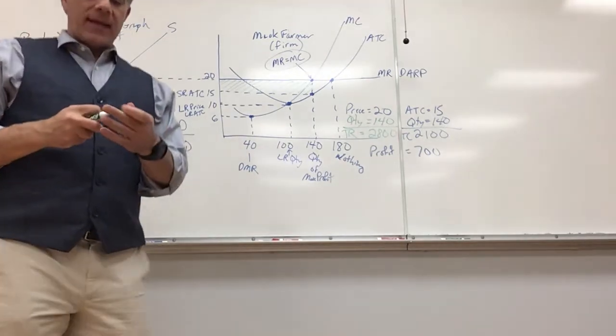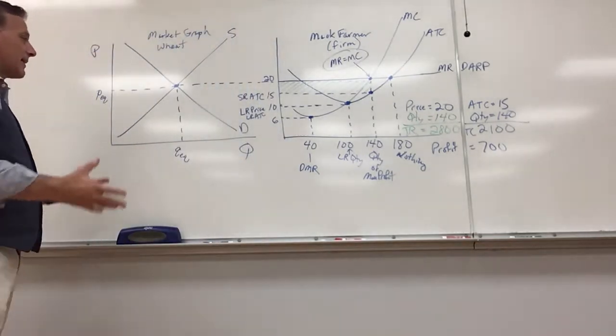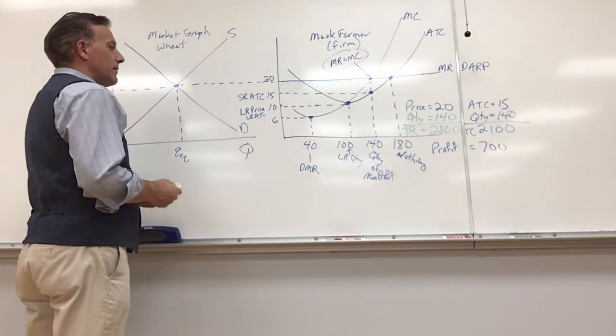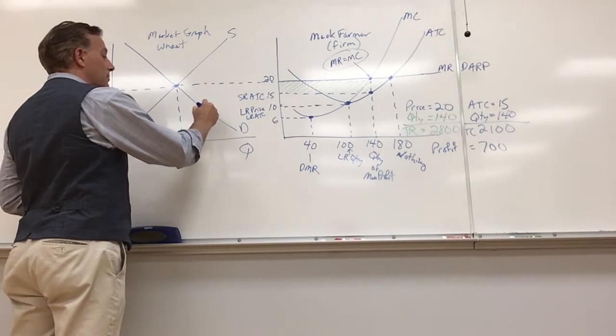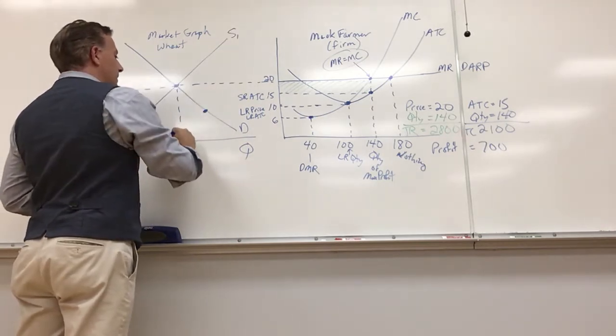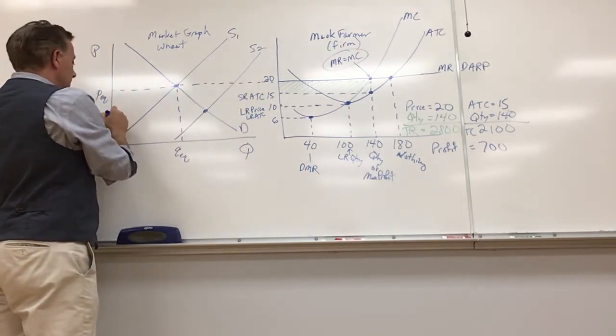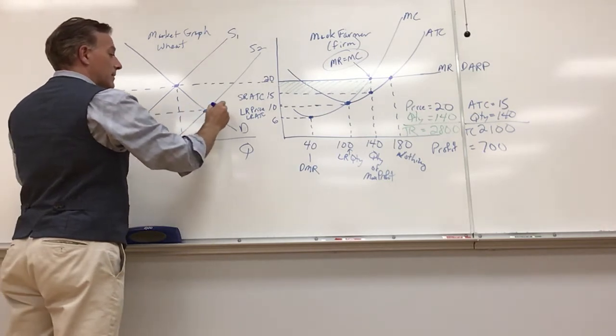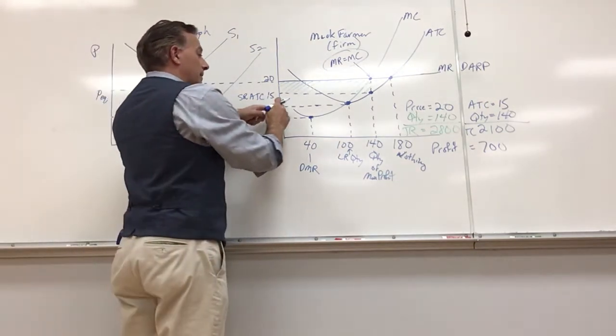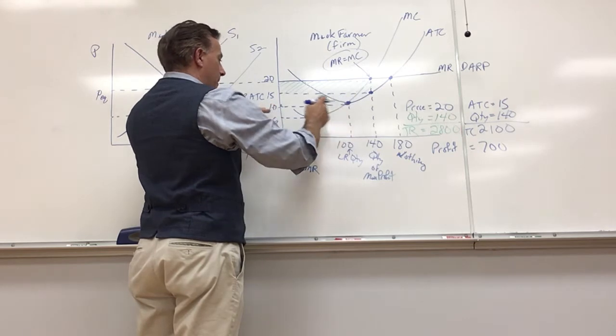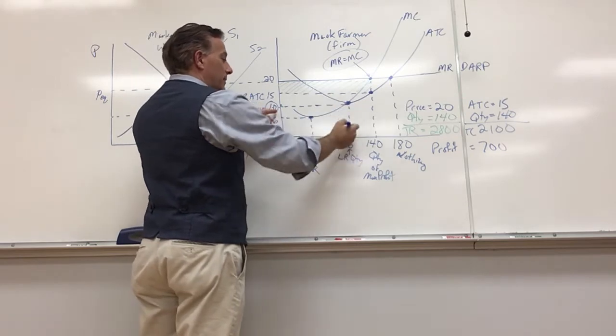So what's going to happen in the long run? There's profit to be made, people are attracted to the industry, so firms join. What happens when firms join? I gotta line this up correctly. The supply increases, and the supply is gonna keep increasing until price comes down to this long run price. Our new Mr. Darp, which is at where MC equals ATC.